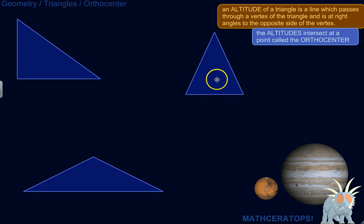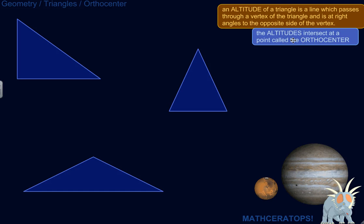Alright, let's find the orthocenter of these triangles. So the orthocenter of a triangle is where all the altitudes intersect.